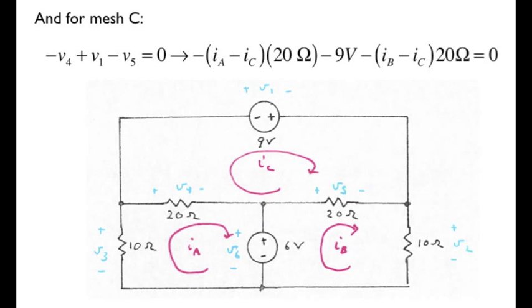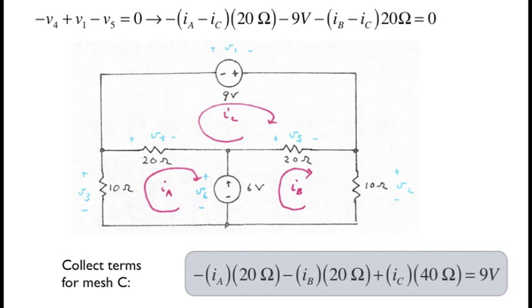And for the third and final mesh of this circuit, Kirchhoff's voltage law can be written as minus V4 plus V1 minus V5 equals zero. Then using Ohm's law and mesh current properties as before, collecting terms, we see that the pattern mentioned before is occurring for this mesh as well. For mesh C, mesh current IC is multiplied by the sum of the resistance in mesh C. I sub A is multiplied by minus the resistance shared by meshes A and C, whereas I sub B is multiplied by minus the resistance shared by meshes B and C.